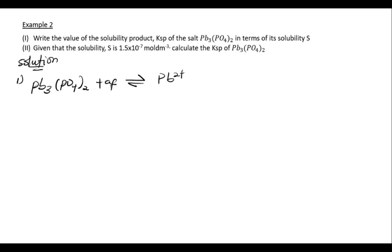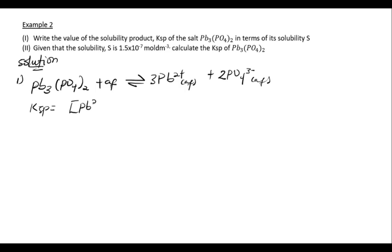The full equilibrium is: Pb₃(PO₄)₂ → 3 Pb²⁺ (aq) + 2 PO₄³⁻ (aq). We verify: the charge from 3 Pb²⁺ is +6 and from 2 PO₄³⁻ is −6, so the charges balance. The KSP expression is therefore KSP = [Pb²⁺]³ × [PO₄³⁻]².